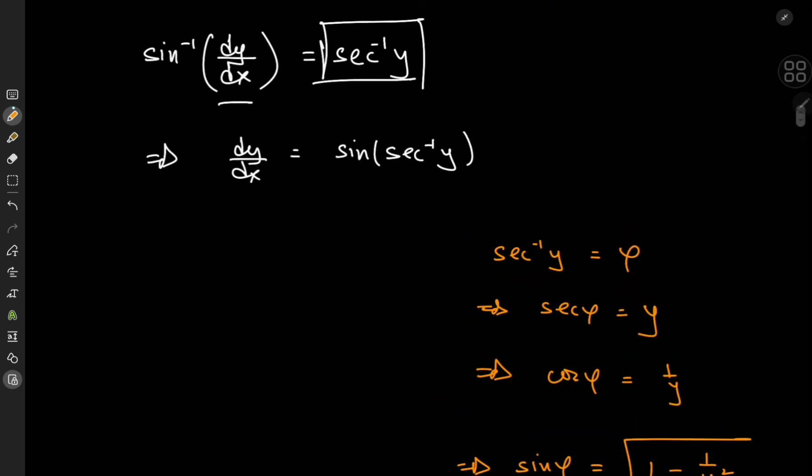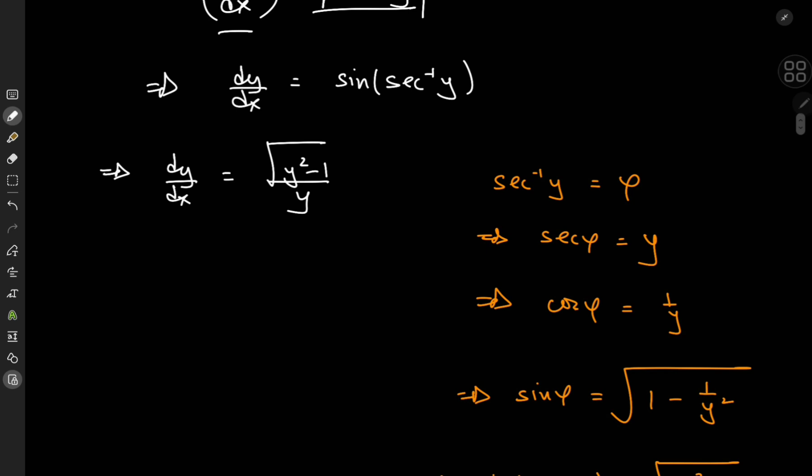Okay, cool. So this means our differential equation sorts out to dy by dx equal to square root y squared minus 1 divided by y, which is a pretty simple separable differential equation.